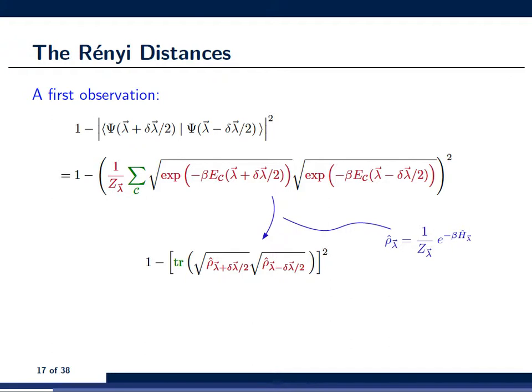Now, we recall that to define, actually, a metric tensor only terms that are of order delta lambda squared are of importance. So, what we can do with this expression, we can do a Taylor expansion in terms of delta vector of lambda and drop all the terms that are at least of order delta lambda cubed. And this is giving us the last line on this slide. And this last line is going to be the basis for a definition of a larger class of distances which we call the Renyi distances.